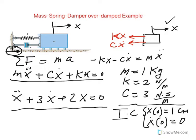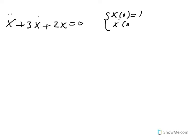I'm going to go to the next page. Let's rewrite this differential equation: x double dot plus 3x dot plus 2x equals zero. Remember the initial conditions are x at zero equals one and x dot at zero equals zero. How do we solve this differential equation?